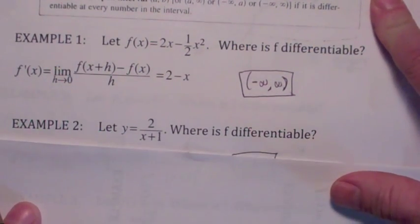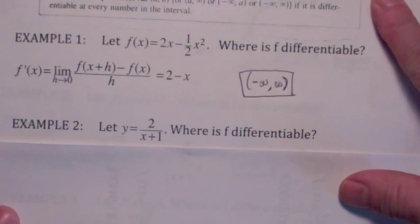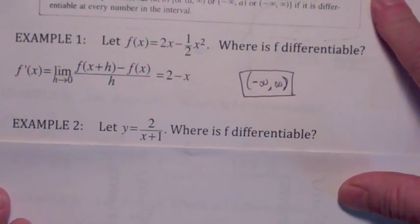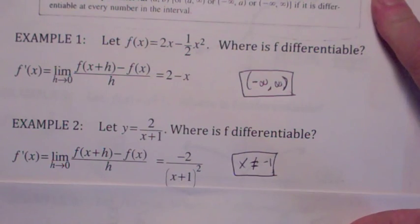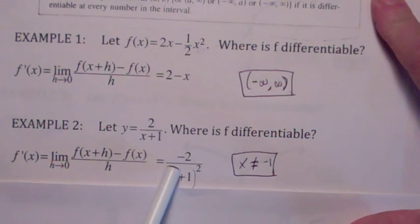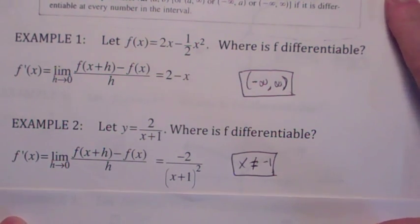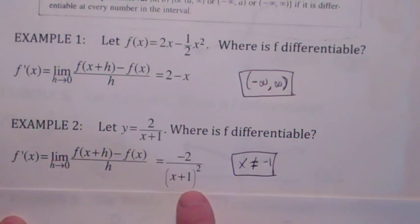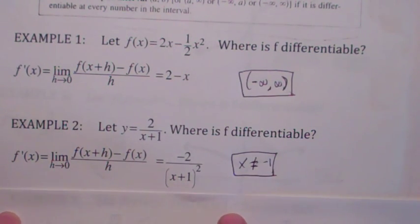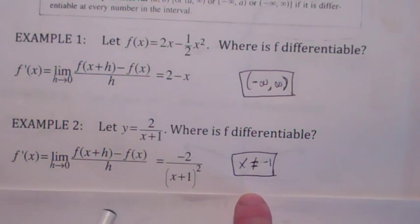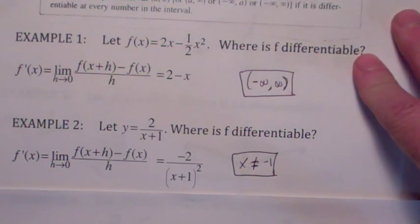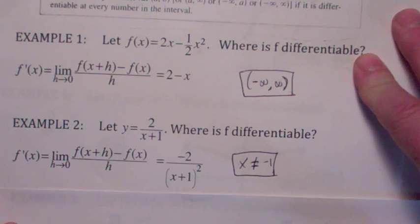How about this one? Where is this function differentiable? 2 over x plus 1. In part one, we computed the derivative to be negative 2 over (x+1) squared. You certainly wouldn't say that the derivative exists at negative 1. The function is differentiable for all x except x equal negative 1.